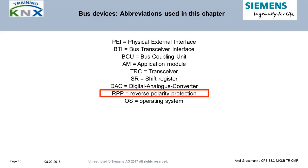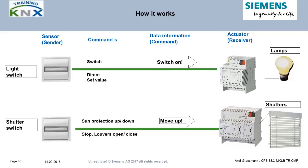The DAC is required if a separate dimming ballast has an analog control voltage input, such as 0–10V DC. RPP is a feature of the TRC chip that prevents the electronics from being damaged if the bus wires plus and minus are mixed up due to reverse polarity. OS stands for Operating System — the core software in a BCU.